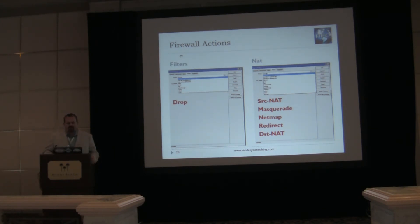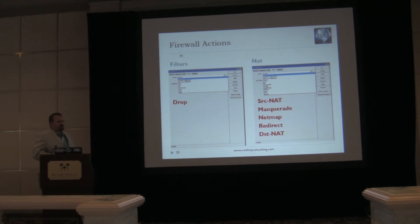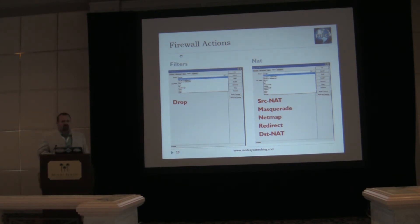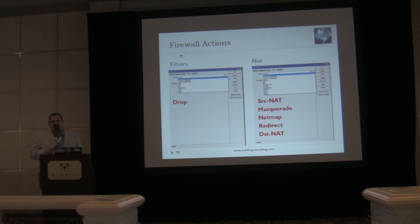Let's talk about what actions we can take. In the filter section, there's really nothing — the closest we can come is dropping a packet; there's no specific field we can change. In the NAT section of the firewall, we have five rules that will affect and rewrite that packet: Source NAT, masquerade, net map, redirect, and Destination NAT. All five of those will rewrite either the destination or source IP address and/or ports.